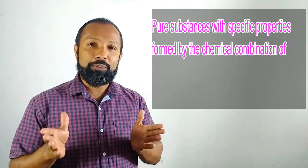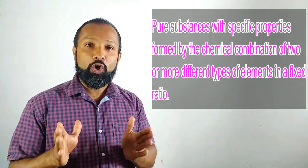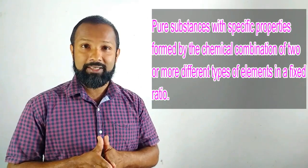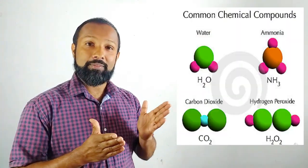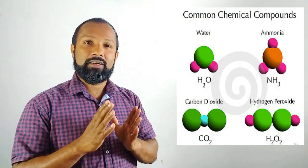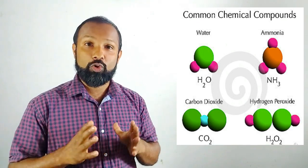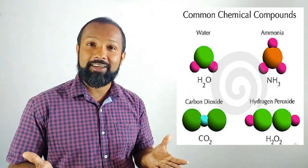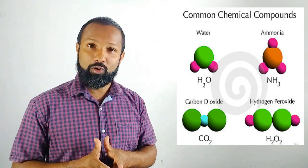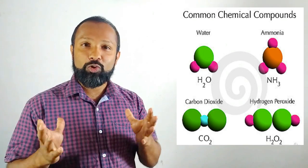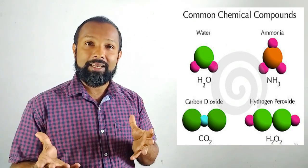Compounds are also pure substances with specific properties. They are formed by the chemical combination of two or more different types of elements in a fixed ratio. Examples of compounds include carbon dioxide, nitrogen dioxide, hydrochloric acid, sulfuric acid, sodium chloride, glucose, urea, and potassium permanganate. The most important thing is that compounds are formed by chemical combination of two or more different types of elements in a fixed ratio.